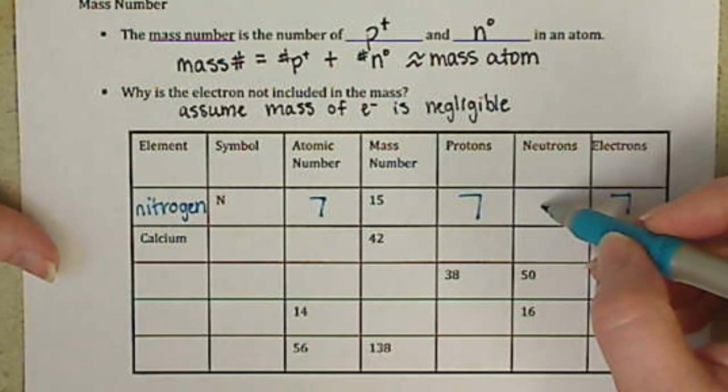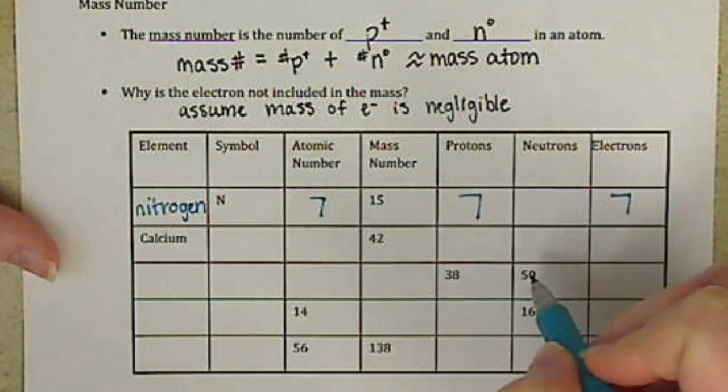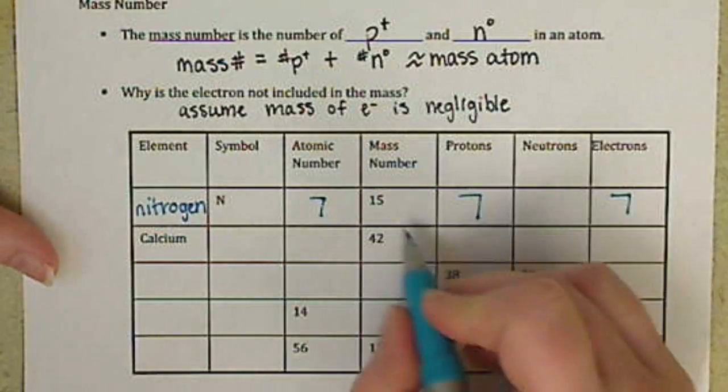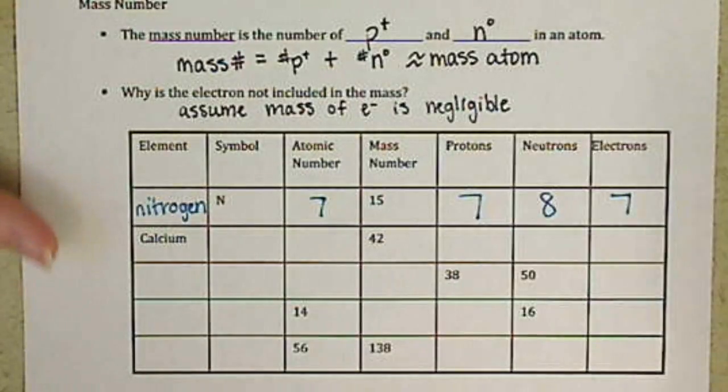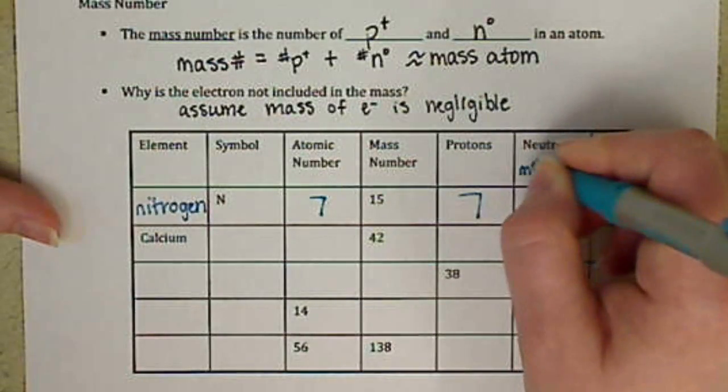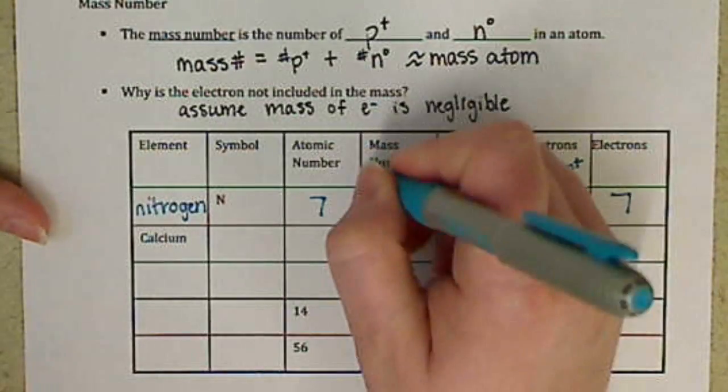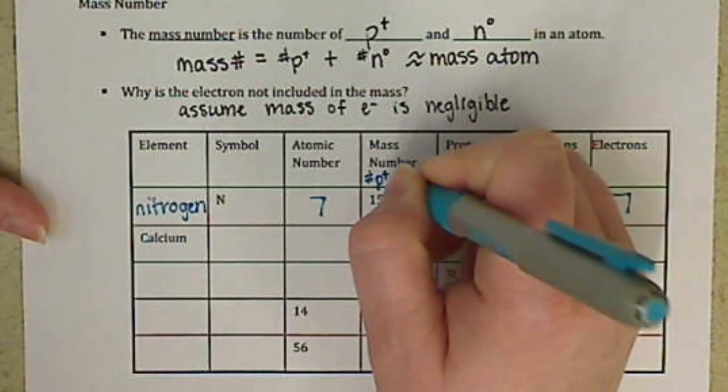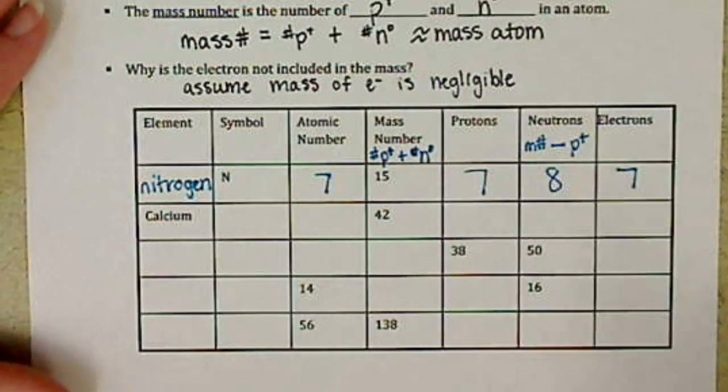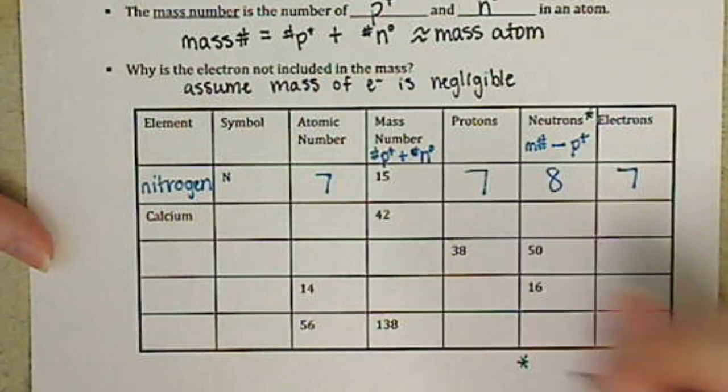And then our neutrons. The only way that we can figure out neutrons is by using our mass number and our number of protons. We cannot get number of neutrons from the periodic table. So we have 15 minus 7 gives us 8 neutrons. So to determine our neutrons, basically we're taking our mass number minus the number of protons. And our mass number, if we have to go the other way, is the number of protons plus the number of neutrons.